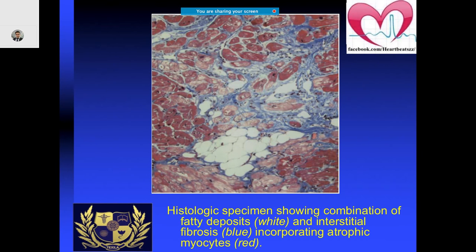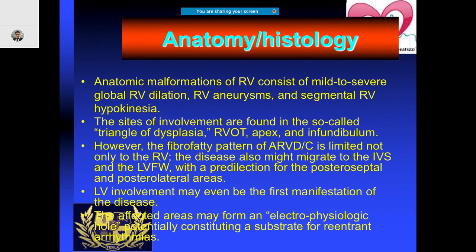This is how the histopathological specimen looks — a combination of fatty deposits and interstitial fibrosis. Looking grossly, you will see mild to severe global RV dilatation, RV aneurysm, and segmental RV hypokinesia. The sites of involvement are found in the so-called triangle of dysplasia: the RV outflow tract, the apex, and the infundibulum. The fibro-fatty pattern is not only limited to the RV — it may also affect the LV in up to 40 to 50 percent of cases, which is why the newer term is ventricular cardiomyopathy.